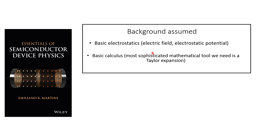Now let me say a few words about the background that is assumed for this course. Since this is an introductory course, we do not assume much background. Basically, we need a little bit of electrostatics, but only the very basic concepts like what is an electric field and what is an electrostatic potential, and also a bit of calculus. Basically, the most sophisticated tool we're going to use is a Taylor expansion, but even if you do not know what a Taylor expansion is, it should be fine as well.